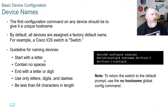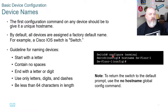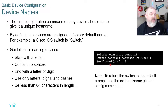To recap: start with a letter, can't start with a number, contains no spaces, ends with a letter or digit, uses only letters, digits, or dashes, and be less than 64 characters in length. To return the switch to the default prompt, use the 'no hostname' global config command. To set a hostname, go to configure terminal, then type 'hostname SW-floor-1'. Now instead of 'switch', the prompt shows 'SW-floor-1', which gives a quick indication of which switch you're on.